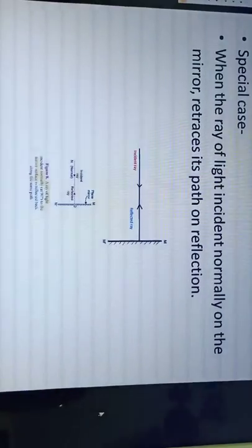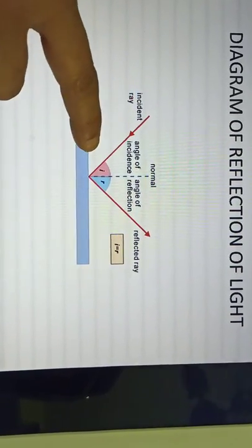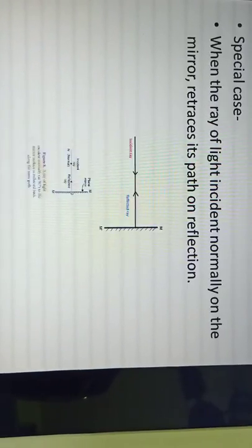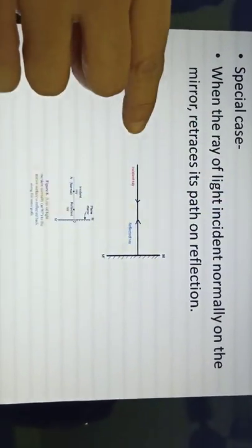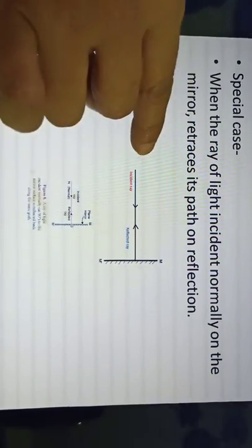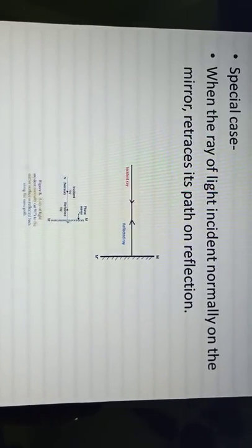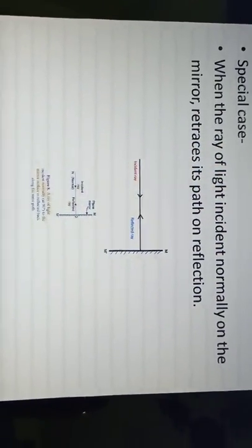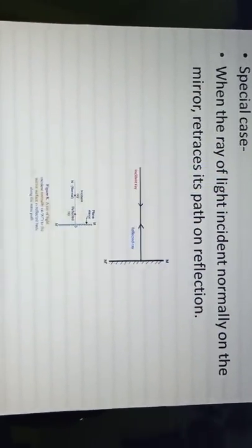Here is a special case. In the previous diagram, the incident ray falls at an angle. But if it falls normally on the surface — perpendicular to the mirror — then it bounces back through the same path. This is because when the ray of light falls on the mirror normally, the angle of incidence is 0 degrees, since the normal, incident ray, and reflected ray are all on the same line. Since I is 0 degrees, R is also 0 degrees. That is why when a ray of light is incident normally on the mirror, it retraces its path on reflection.